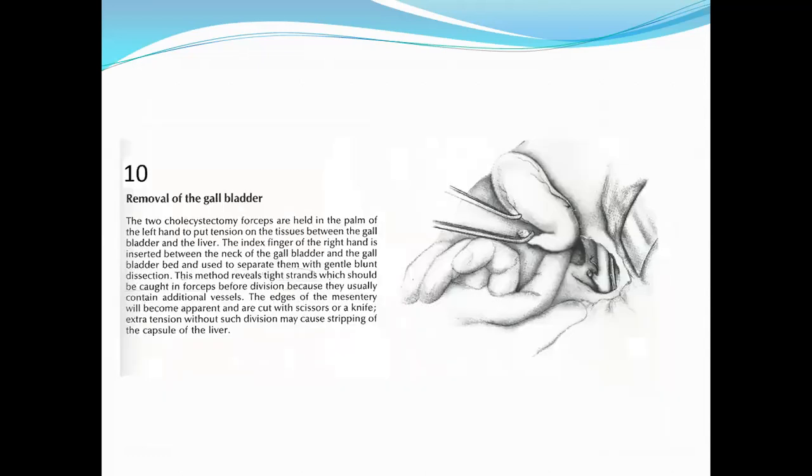Removal of the gallbladder: the two cholecystectomy forceps are held now in the palm of the left hand to put tension on the tissues between the gallbladder and the liver bed. The index finger of the right hand is inserted between the neck of the gallbladder and the gallbladder bed in the liver and used to separate them very gently with blunt dissection. This method reveals tight strands which should be caught in forceps before division, because they usually contain additional vessels. The edges of the mesentery will become apparent and are cut with scissors or a knife. Extra tension without such division may cause stripping of the capsule of the liver and provide some bleeding.